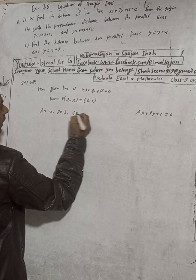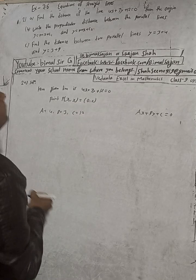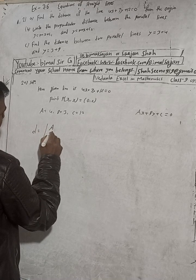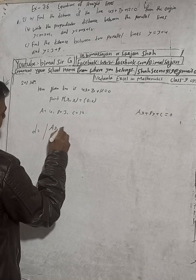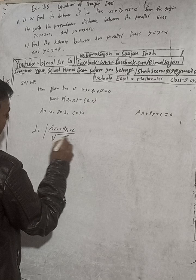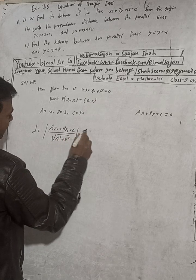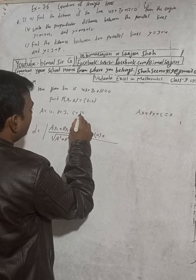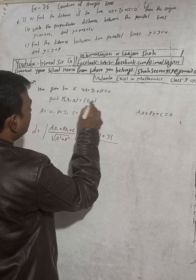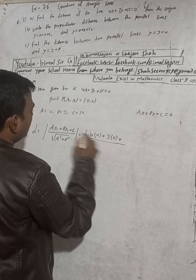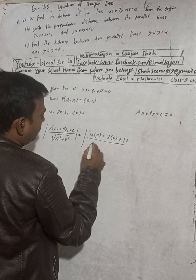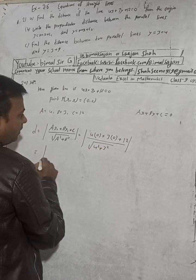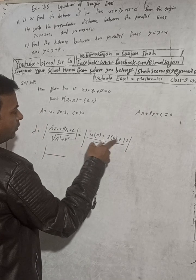Now find the distance of the line. Distance D is given by the formula: D equals modulus of ax1 plus by1 plus c, all divided by root of a squared plus b squared. Substituting: 4 times 0 plus 3 times 0 plus 12, divided by root of 4 squared plus 3 squared. This gives 12 divided by root of 16 plus 9.